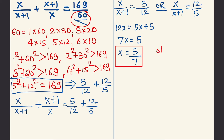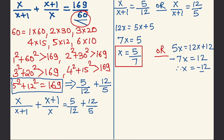Now finding the second root: 5x = 12x + 12, so −7x = 12, therefore x = −12/7. We got the second root of the quadratic equation: x = −12/7.